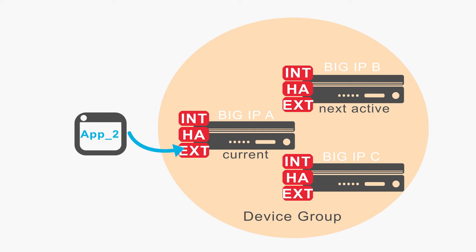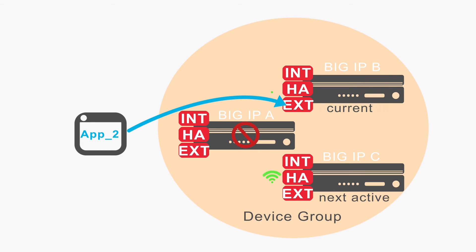Before failover happens, the current device and the next active device continually ping each other to see if each is still up at any given moment. In a typical configuration, the devices ping each other using the non-floating self-IP address created for VLAN-HA during initial BIG-IP setup. But if the next active device pings the current device and fails to get a response, the BIG-IP system triggers failover and designates a new next active device.